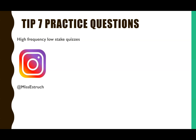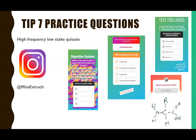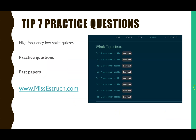Tip seven: practice questions. There are different types — high-frequency, low-stakes quizzes throughout your course: on my Instagram I post multiple GCSE and A-level biology questions daily, low stakes meaning no consequence to getting them wrong, just to keep topics in mind and identify what you need to revise. The next stage is practice questions or full past papers, available on my website msestrich.com, split by topic or by skill — application, long-answer questions, maths, and practical skills.